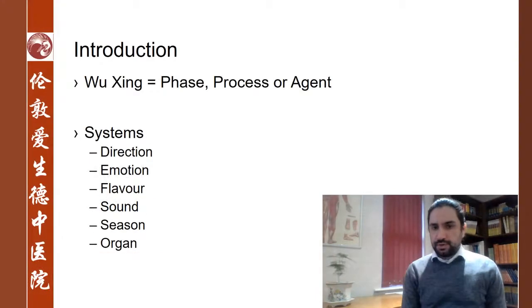There are many translations for the Chinese Wuxing. Some people use Five Phases, Five Agents. Ultimately, these are five systems, and within each system, a number of natural phenomena and different ideas are integrated.